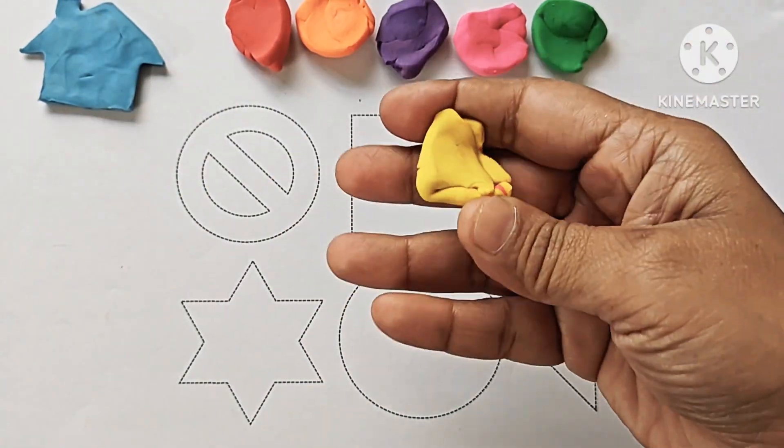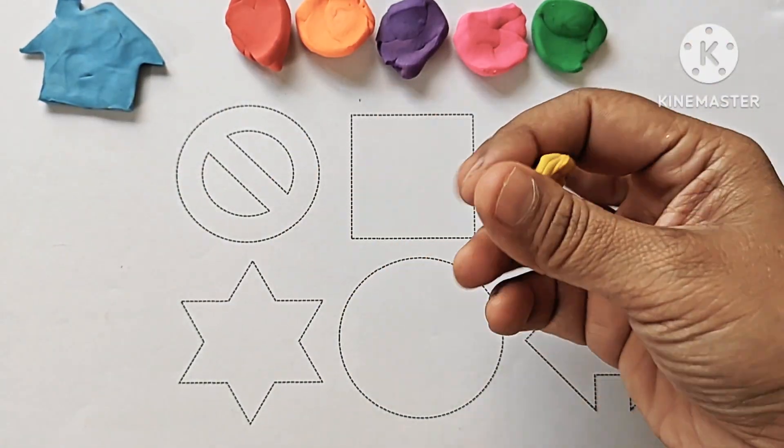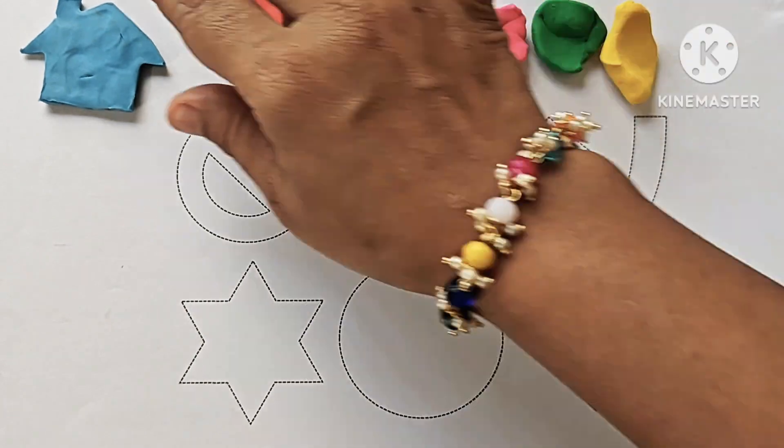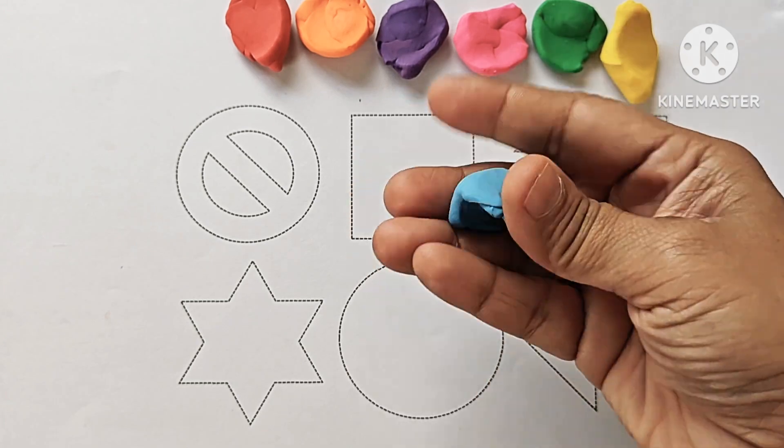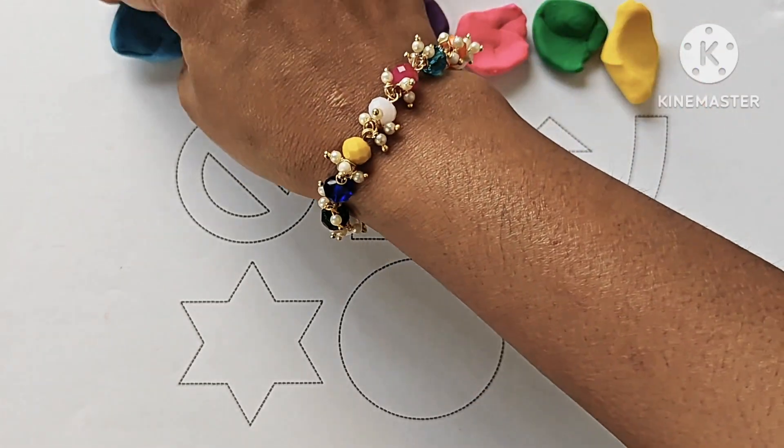Yellow color. What is the color of this house? It is sky blue. Sky blue color.